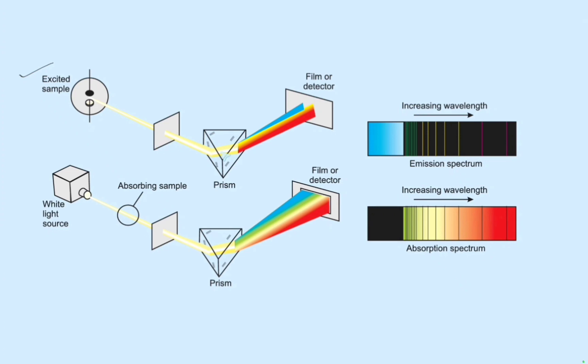These emitted radiations are made to pass through a prism and it is recorded using a photographic film or a detector. The spectrum obtained will have colored lines against dark background. The emitted lines will be colored whereas the background will be dark for the emission spectrum of atom.